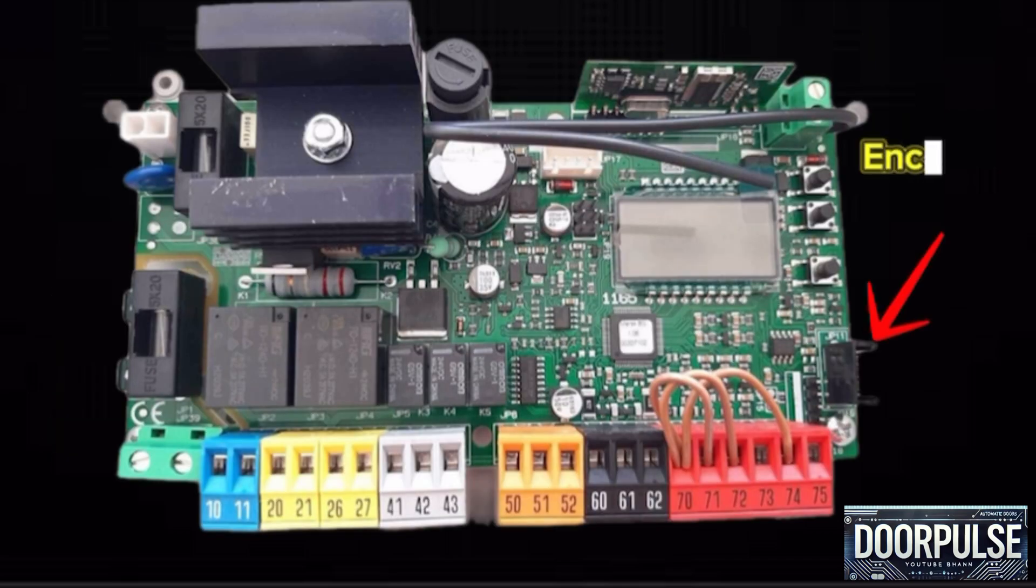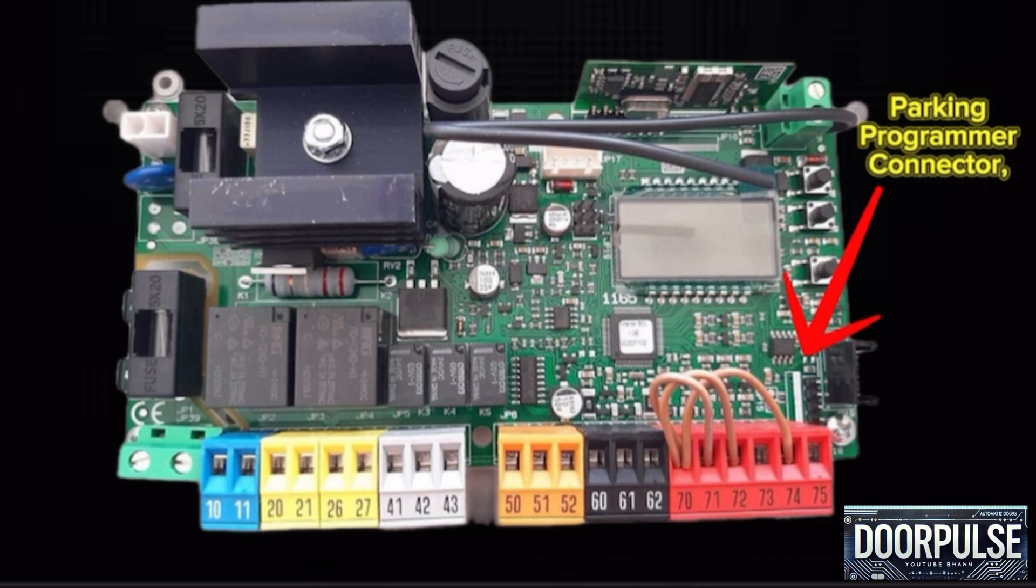JP10 block: a block for encoder connector, the connection point for the encoder which monitors the barrier's movement and position. JP18 block: a block for parking programmer connector, interface for connecting a programmer to configure the barrier settings.